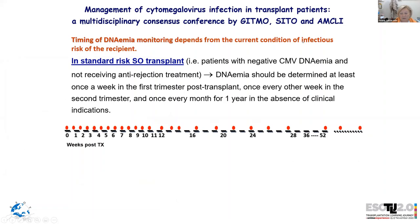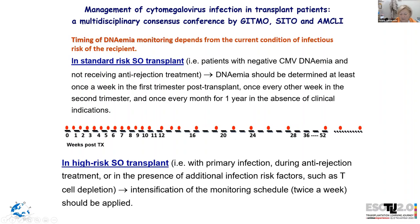Regarding the timing of DNA monitoring, the schedule depends on the infectious risk of the recipient. For standard risk patients, DNA should be determined at least once a week in the first trimester, once every other week in the second trimester, and once monthly for one year. For higher risk transplant patients — for example, with primary infection or during anti-rejection therapy — it is very important to intensify the monitoring schedule.